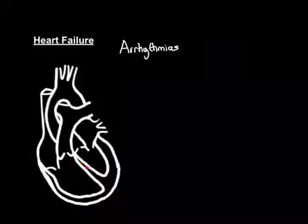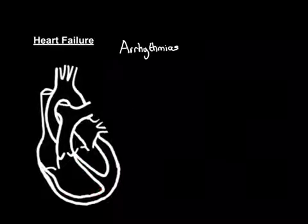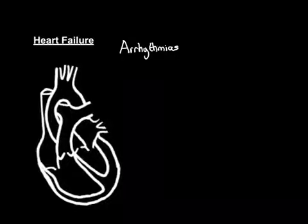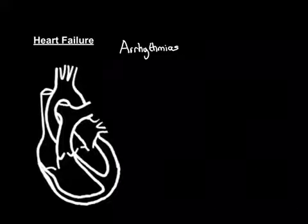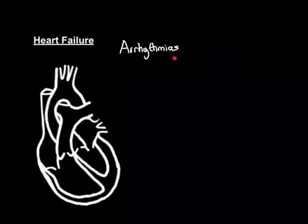It's then continued on by something called the bundle of His, which splits into the right bundle branch and the left bundle branch, spreading it to the right ventricle and the left ventricle respectively. That is the normal electrical activity within the heart. Anything wrong with that is called an arrhythmia.